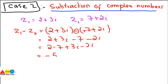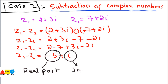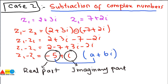Collecting like terms: 2 minus 7, plus 3 iota minus 2 iota. Now 2 minus 7 is minus 5, and 3 iota minus 2 iota is plus iota. So we get minus 5 plus iota, which is exactly in standard form. The real part is minus 5 and the imaginary part is iota. This is how we separate the real and imaginary parts after subtracting two complex numbers.